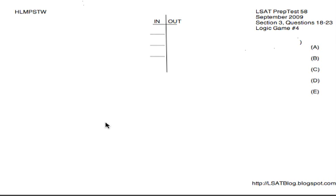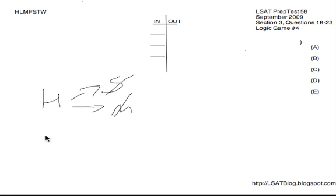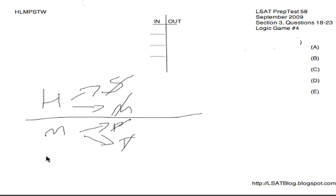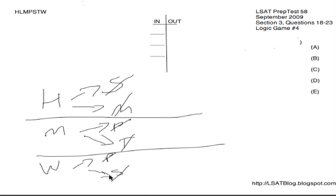We've got: if H is in, then both S and M are out. So H in requires S out and M out. The next rule tells us if M is in, then we're going to lose both P and T. Finally, if W is in, then we're going to lose both P and S. So lots of positive-then-negatives — if we have each of these things in, we lose each of these things.